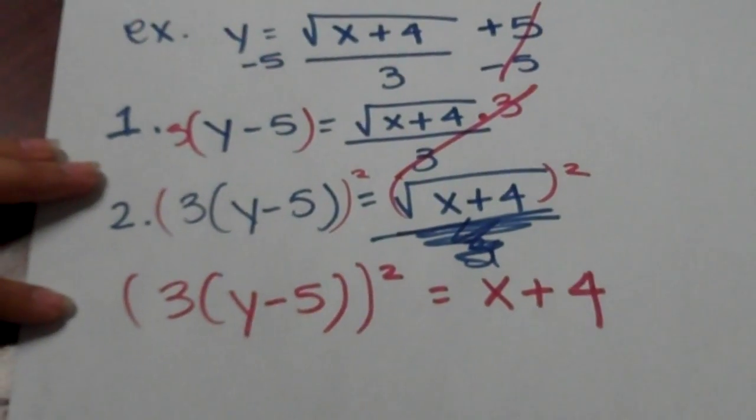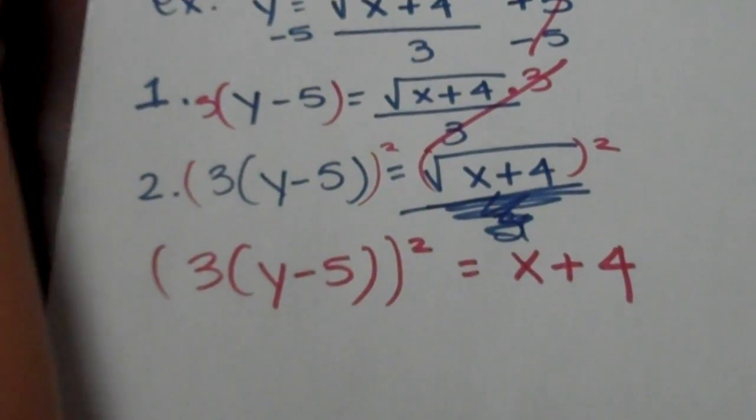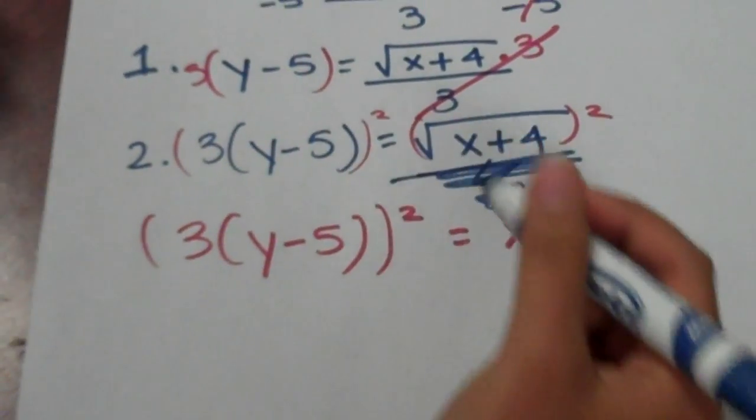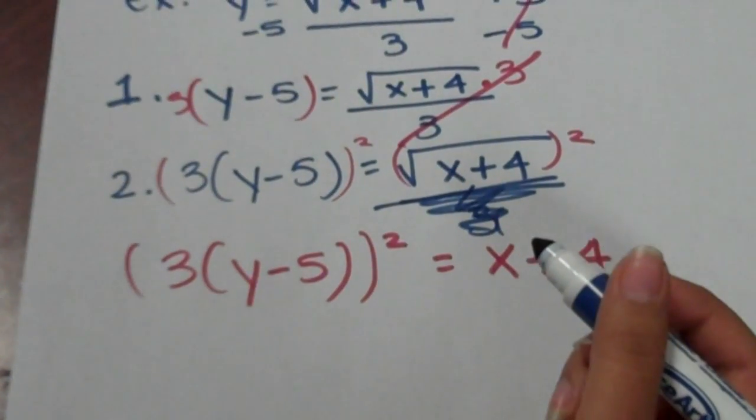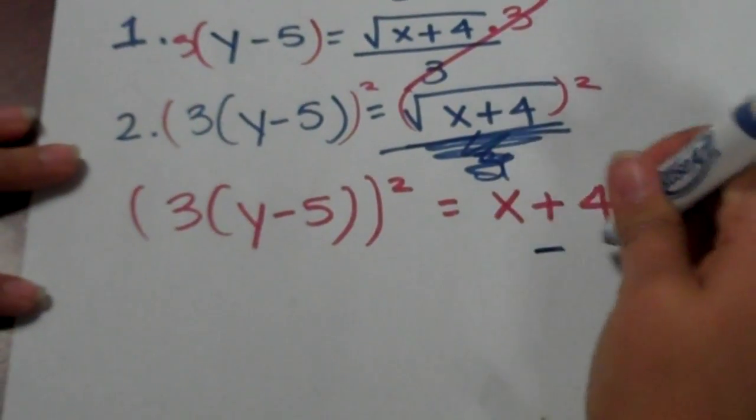Our fourth and final step is to isolate the variable. Just subtract by 4 to isolate the variable.